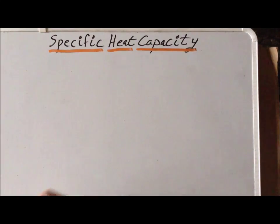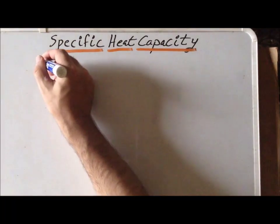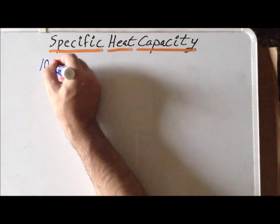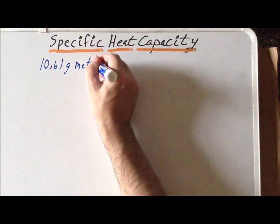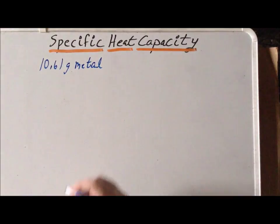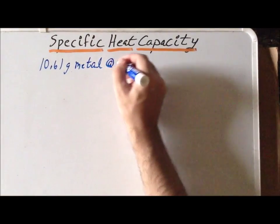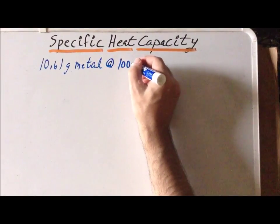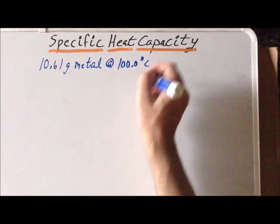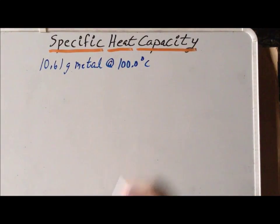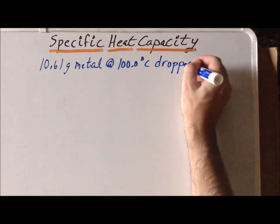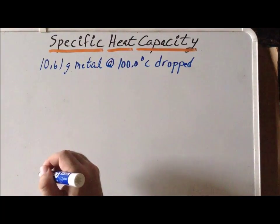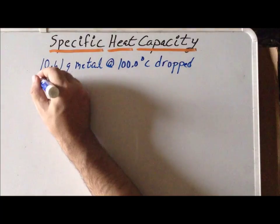In the situation we are going to investigate, we have 10.61 grams of a metal, and it is originally at 100 degrees centigrade. And this particular metal is dropped into 250 milliliters of water.